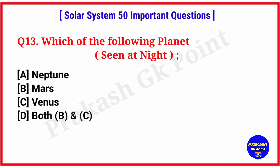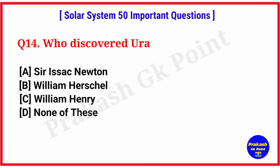Which of the following planets is the red planet? Answer: option B, Mars. Who discovered Uranus? Answer: option C, William Herschel.